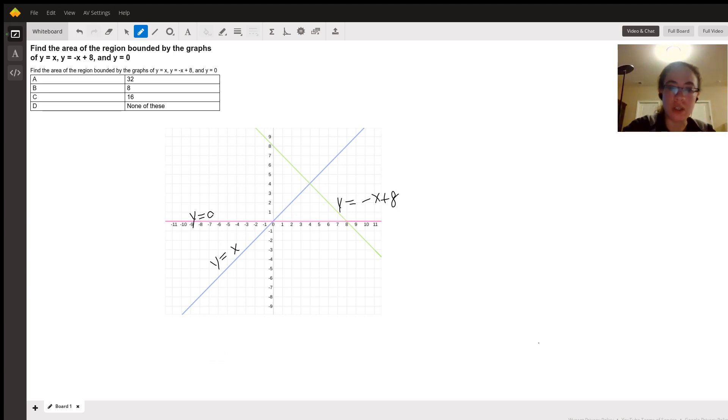Note that your region is bounded above by y equals x on the left side of four, and bounded above by y equals minus x plus eight on the right side of four. And so for that reason, we need to split up our problem.